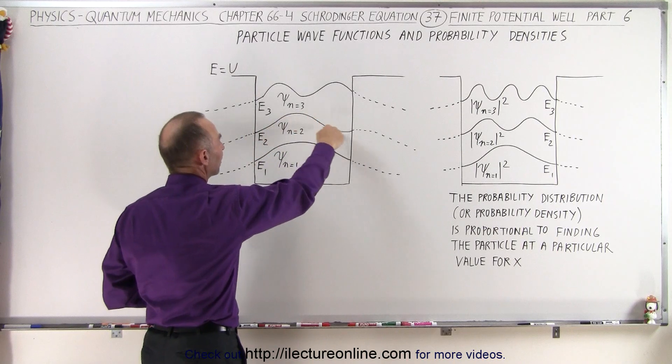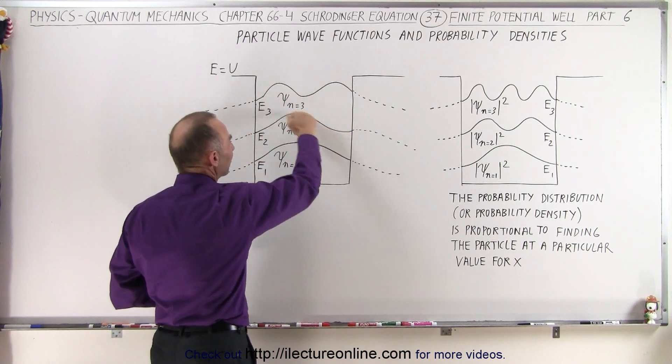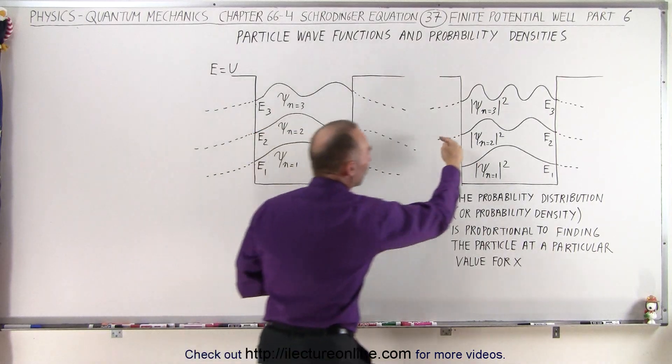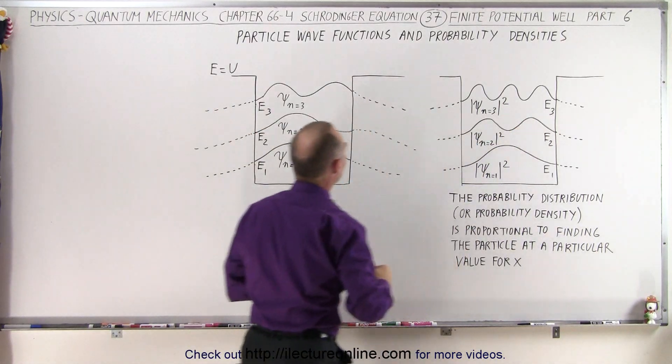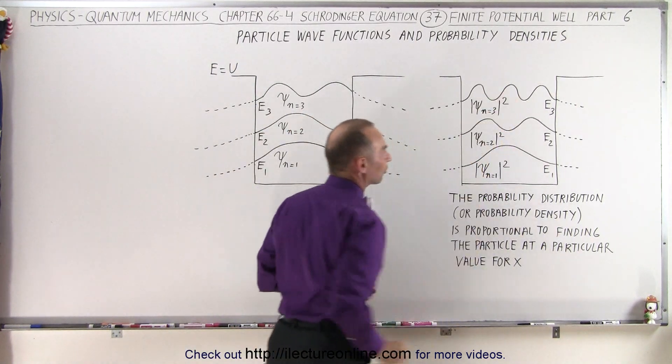Here for the energy level n equals 2, we can see that this is what the wave function looks like, but when we square it, we get something that looks like this. And if we take this wave function here and square it, we get something that looks like that.